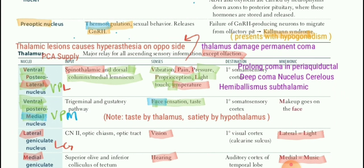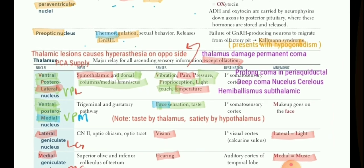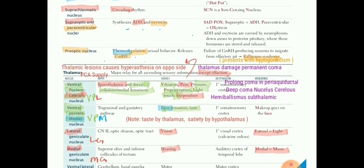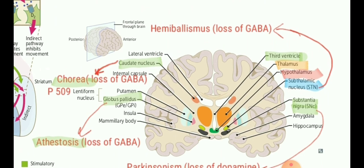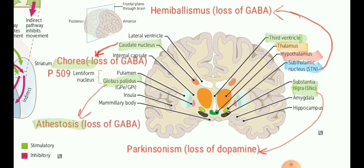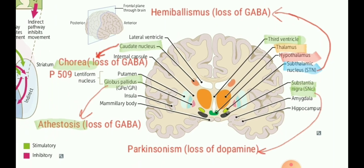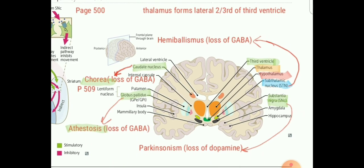Prolonged coma is associated with the periaqueductal gray matter, and deep coma with the nucleus coeruleus — these are other MCQs that are often confused with thalamus. Hemibalismus is because of subthalamic nuclei, not the thalamus nor the hypothalamus — subthalamus is a different entity. In summary: thalamus is for most sensory sensations; hypothalamus is for sexual sensations, GnRH release, thirst center, hunger center, and heating center; and subthalamus is for hemibalismus with loss of GABA leading to hemibalismus on the opposite side. These are very important MCQs — keep these two pages together.